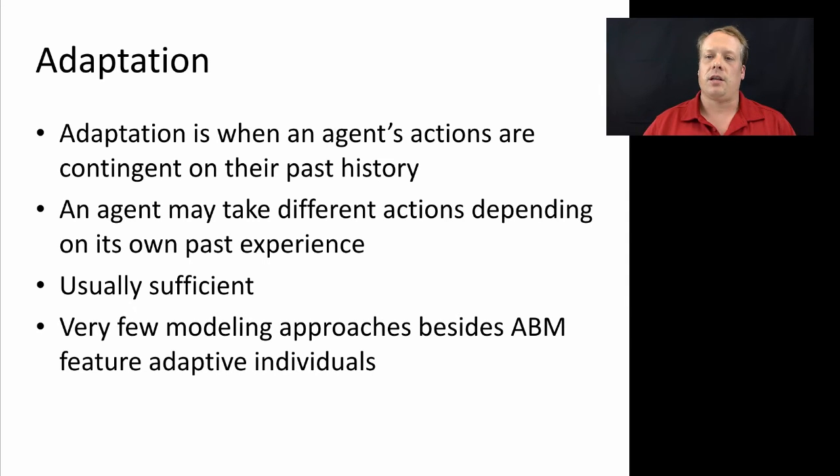As opposed to time, which is a necessary condition of most agent-based modeling approaches, adaptation is almost a sufficient condition. If the agents you want to explore feature adaptation, then there are very few other methods by which you can understand that system except through some form of agent-based modeling. Let's be precise about what adaptation means. I mean that the agent takes different actions over time, even when presented with the exact same state of the world that they had seen in the past, and its reason for taking that new action is due to some experience it has in the past. Adaptation is when an agent's actions are contingent upon their past history within that system.